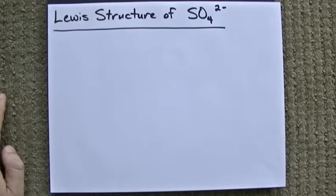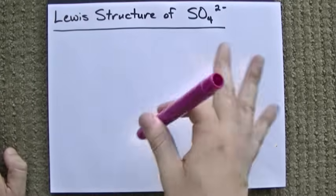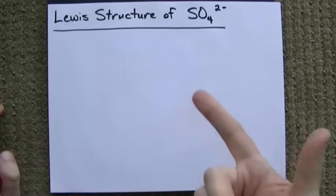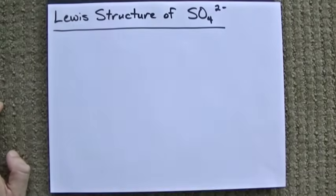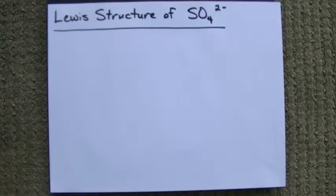Hey guys, I had a video about this up, but for some reason it was cut off at the end and I caught a lot of flack for it. So I took it down and I've got to redo another one. Here we go. We're looking for the Lewis structure of the sulfate ion, SO4 2-.